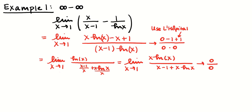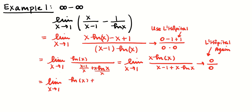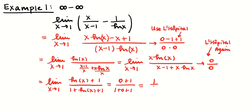Using L'Hôpital's rule one more time, I get the limit as x approaches 1 of: the derivative of x·log(x) — which is log(x) plus 1 — divided by the derivative of x plus x·log(x), which is 1 plus log(x). Plugging in x approaching 1: log(1) is 0, so the numerator gives 0 plus 1 = 1, and the denominator gives 1 plus 0 plus 1 = 2. So the answer is 1/2. That's an example of infinity minus infinity not equaling 0, but going towards 1/2.